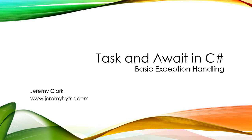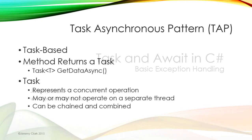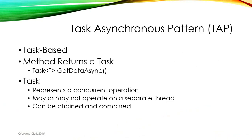This is Jeremy Clark of JeremyBytes.com and today we're going to continue our series on task and await in C#. This time we'll be taking a look at basic exception handling when we're using task or await. As a reminder we're working with the task asynchronous pattern. This is task-based and a task represents a concurrent operation. Once we start talking about exceptions happening on other threads things start to get interesting, so we'll see how we can handle that using task directly.